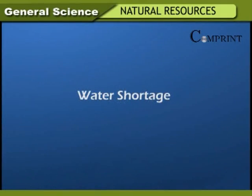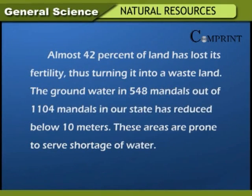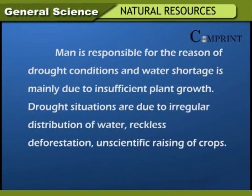Water shortage: Almost 42% of land has lost its fertility, turning into wasteland. The groundwater in 548 mandals out of 1,104 mandals in our state has reduced below 10 meters, making these areas prone to severe water shortage. Man is responsible for drought conditions, mainly due to insufficient plant growth, irregular distribution of water, reckless deforestation, and unscientific raising of crops.